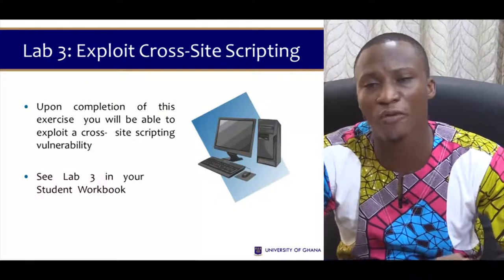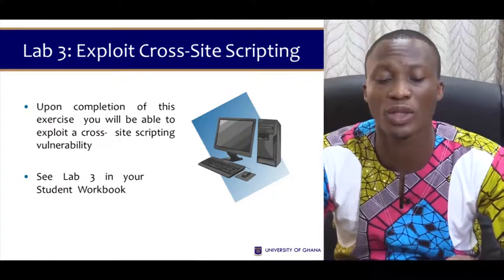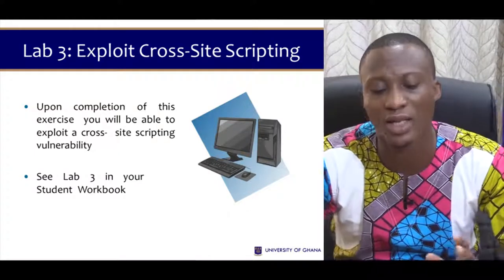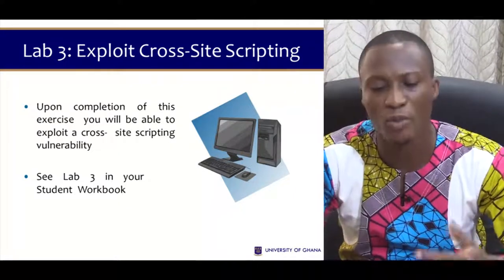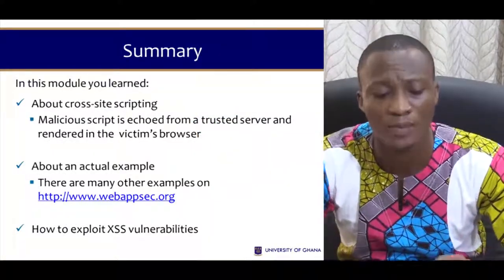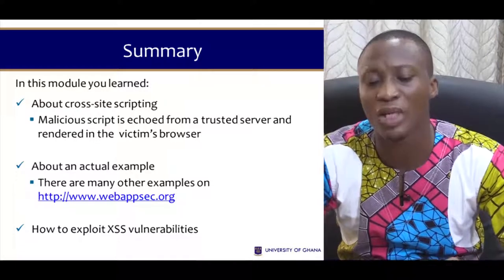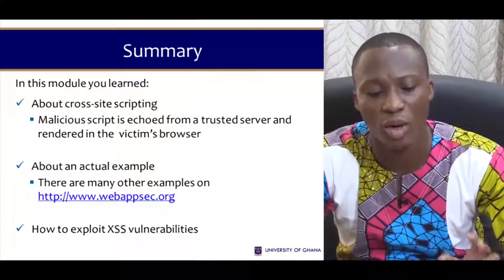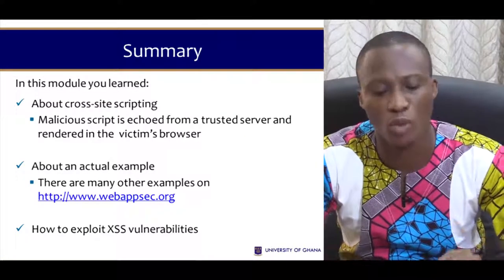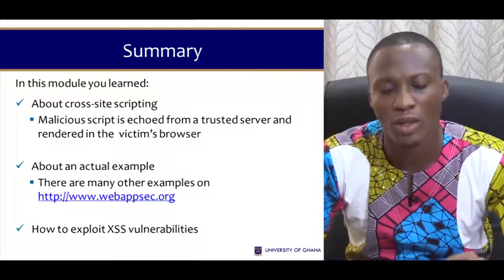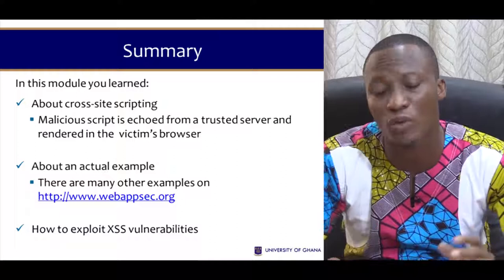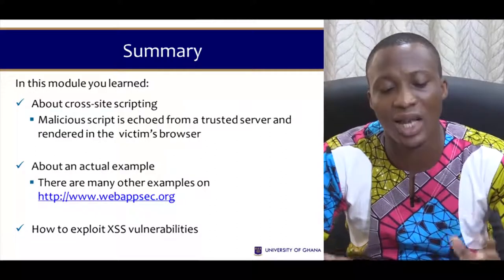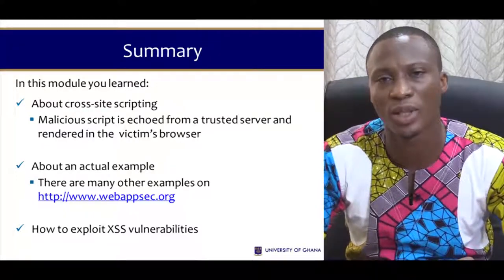In Lab 3 of Sakai you will see how to exploit cross-site scripting, and upon completion of this exercise you'll be able to exploit a cross-site scripting vulnerability. In this module we've looked at malicious scripts echoed from a trusted server and rendered in the victim's browser. We've also looked at actual examples from webappsec.org, seen how to exploit XSS vulnerabilities, and how to fix them. This brings us to the end of Section 5 — see you in Section 6.